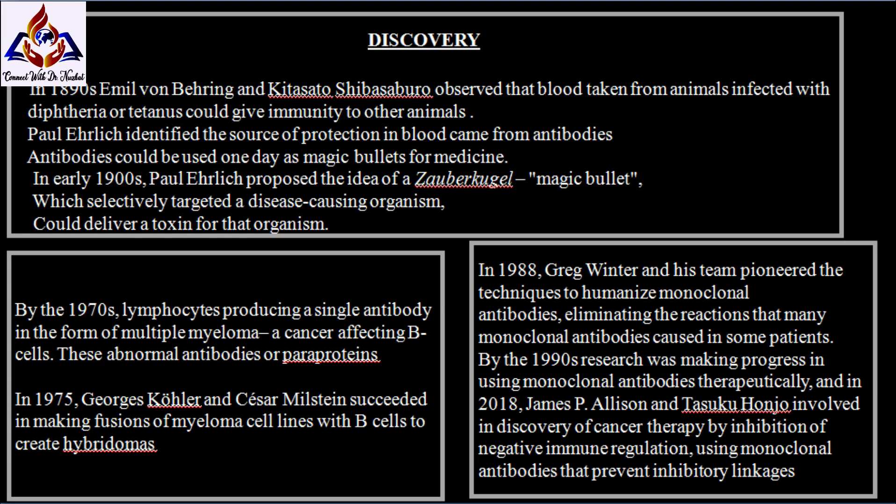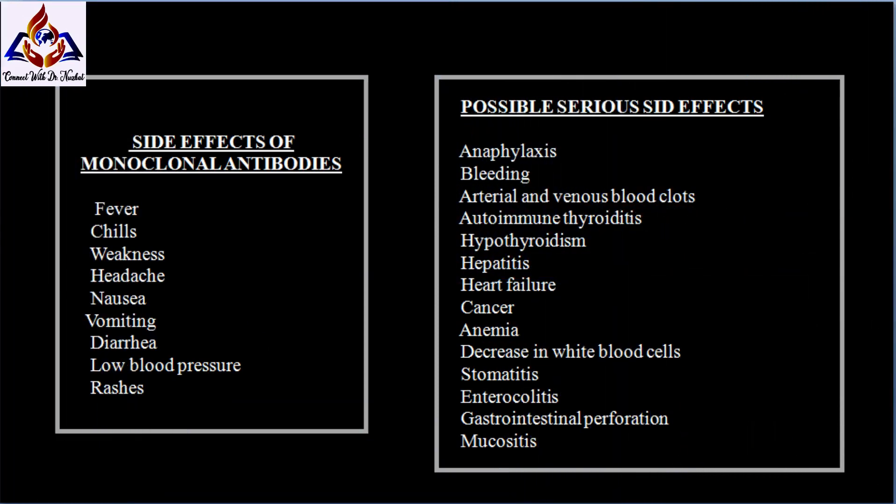They shared the Nobel Prize in Physiology or Medicine in 1984 for the discovery. In 1988, Greg Winter and his team pioneered the techniques to humanize monoclonal antibodies, eliminating the reactions that many monoclonal antibodies can cause in some patients. By the 1990s, researchers were making progress in using monoclonal antibodies therapeutically. In 2018, James P. Allison and Tasuku Honjo received the Nobel Prize in Physiology or Medicine for their discovery of cancer therapy by inhibition of negative immune regulation using monoclonal antibodies that prevent inhibitory linkages.